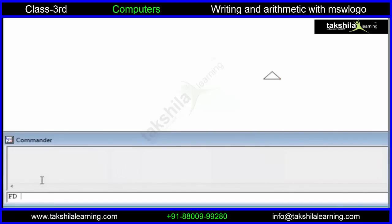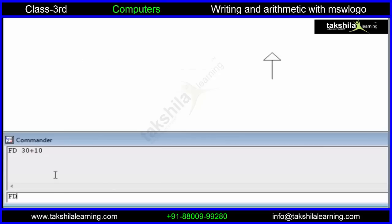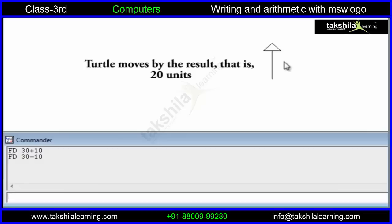When we give a forward command of 30 plus 10, the command first adds the two numbers and then moves the turtle forward by the result, i.e. 40. Similarly, when the numbers are subtracted, the turtle moves by the result, which is 20 steps.